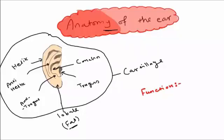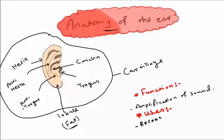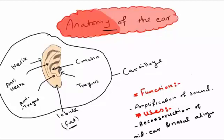Functions of the ear pinna: the ear pinna is made for amplification of sounds. Uses of the external part of the ear - the cartilage is used for the reconstruction of the structures of the middle ear and nasal alignment.